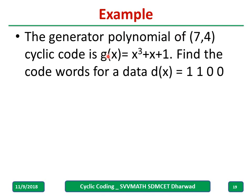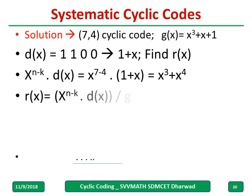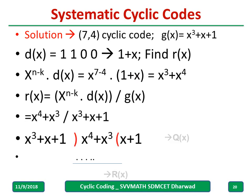And same example, g(x) but data is different. Follow the same procedure. Pause here, do it, compare your answer. And d(x) is given 1100, polynomial I have written and simply I fill the Xⁿ⁻ᵏ into d(x) divided by g(x) and q(x) I have to note down, r(x) I have to note down. Using these two I have to write a codeword.